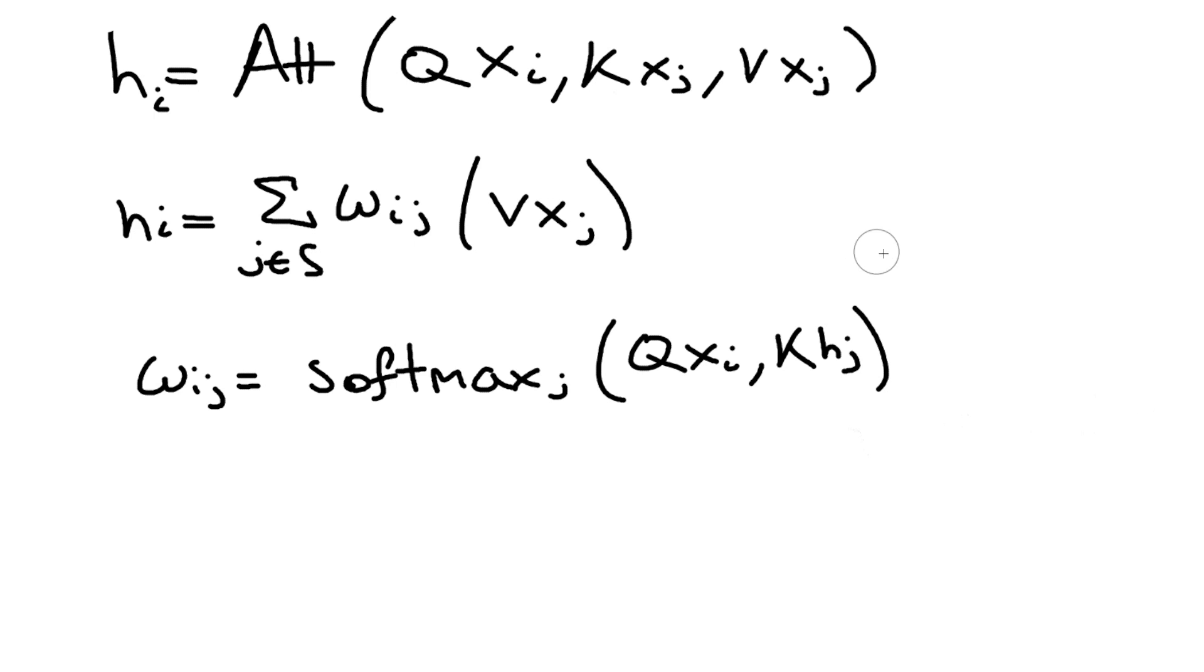This is kind of what it looks like. There's some terminology here with the query, key, and value. I personally don't like so much this terminology, but anyway, your query and key are what are used to compute the attention weights—these ω_{ij}'s with the softmax. These are effectively a probability mass function, a different probability mass function for each word, which depends on your x_i.